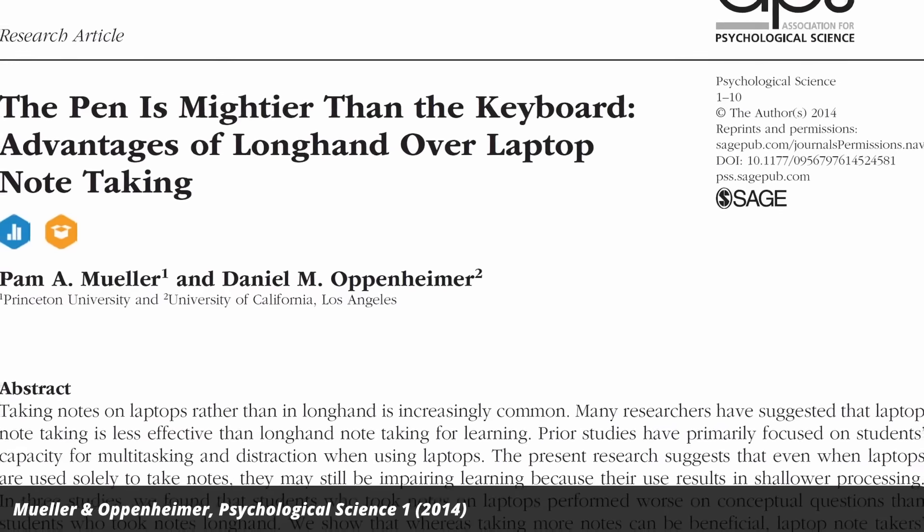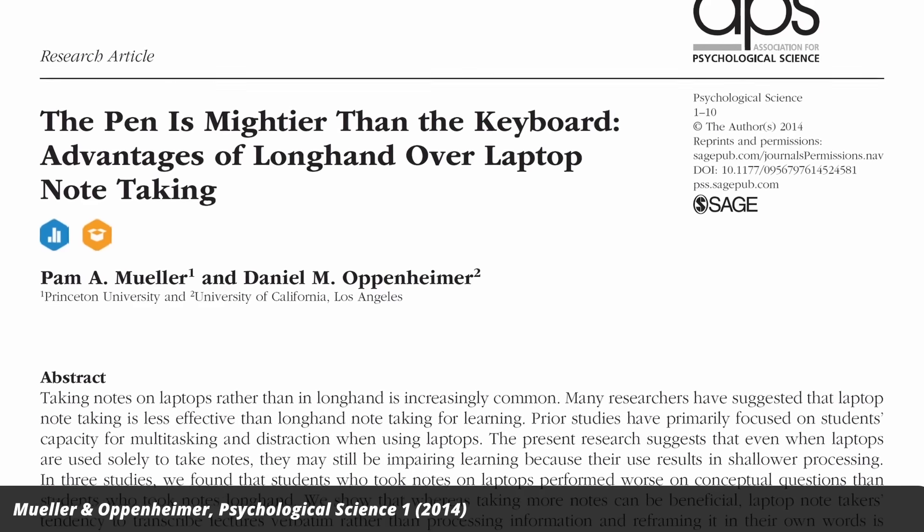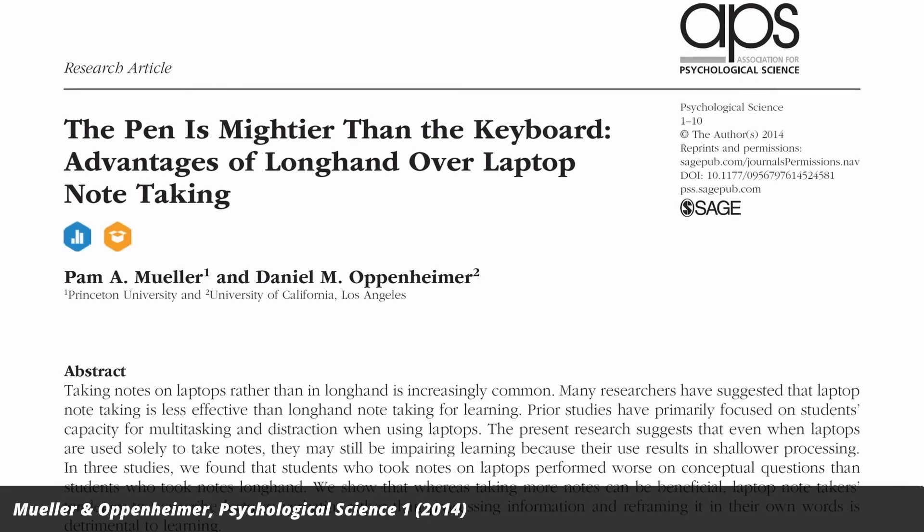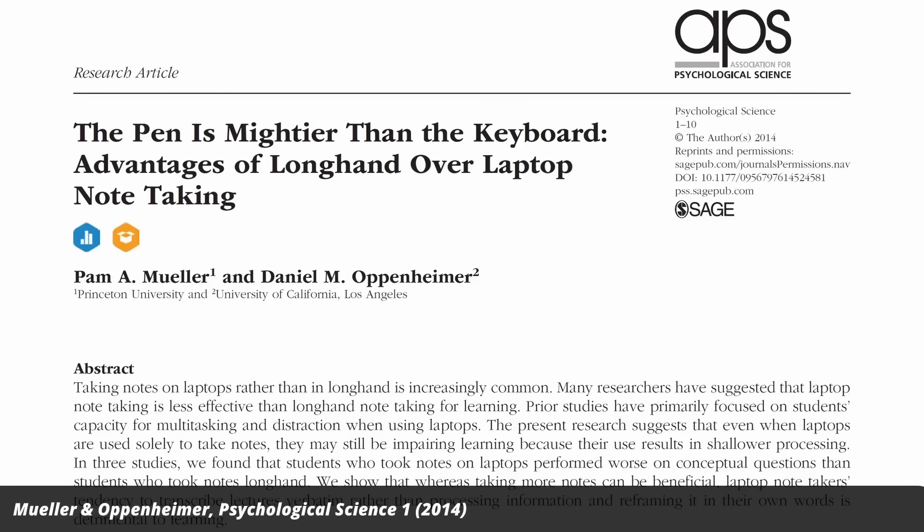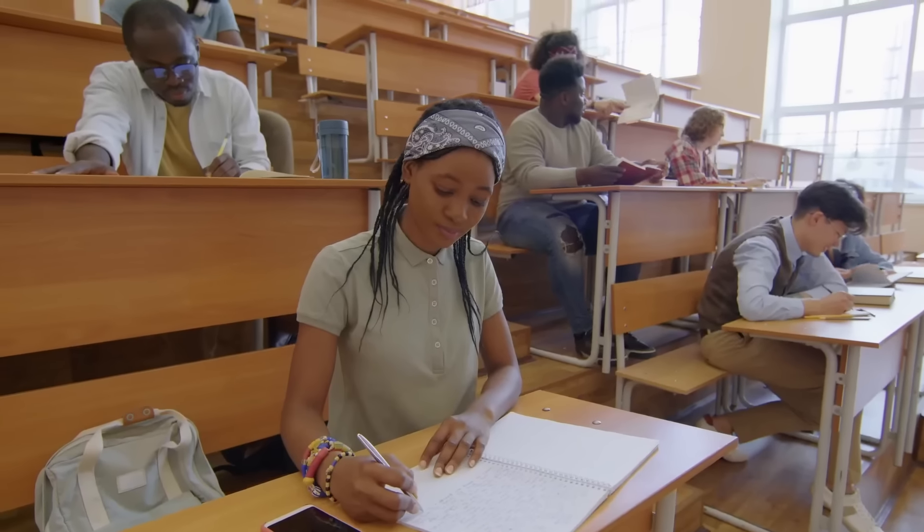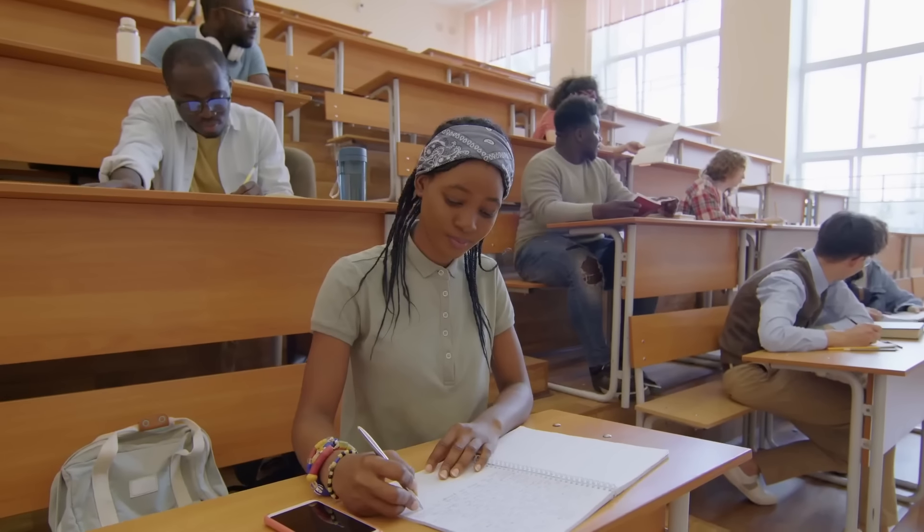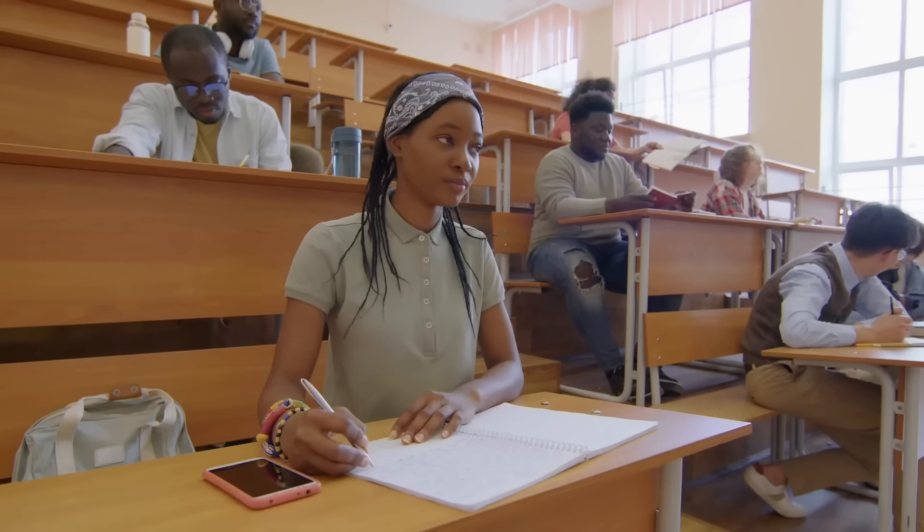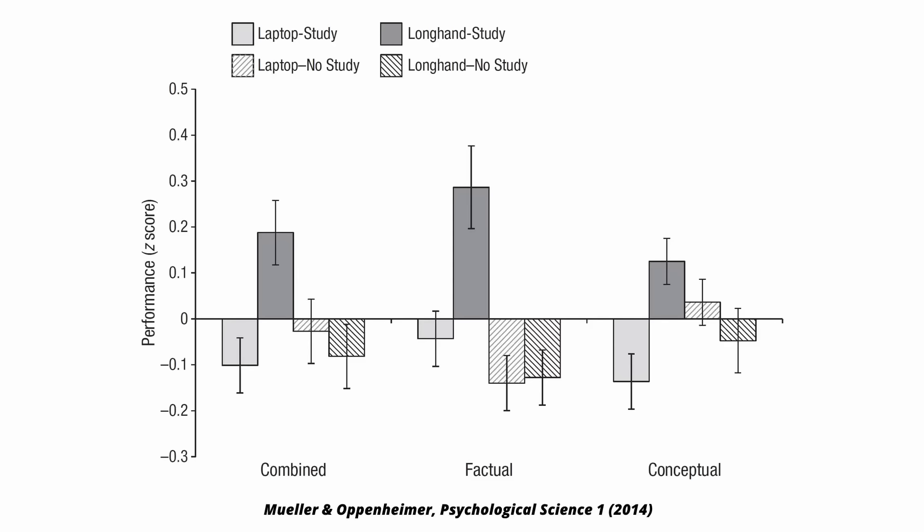For example, a study from 2014 found that students who took notes on laptops couldn't recall as much about their notes as students who wrote by hand on a notepad. In one experiment, they recruited about 100 students in Los Angeles and asked them to take notes of a lecture. They divided them into two groups. One took notes on a laptop, the other by hand. A week later, half of each group was allowed to study their notes, the other one not. And then everyone was asked questions about the lecture. The handwriting students who were allowed to study their notes did best, especially on factual questions.